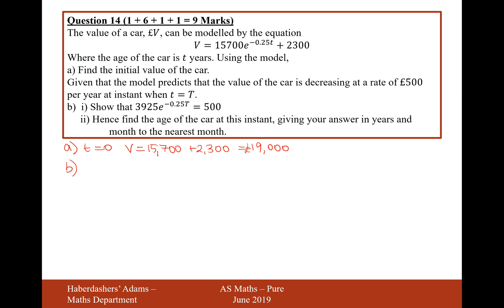Given that the model predicts that the value of the car is decreasing at a rate of 500 pounds per year at the instance when t equals t, show that 3925 e to the minus 0.25 t equals 500. So given that the model predicts decreasing, in this case we need to differentiate. Now the way you differentiate an e equation is you times the minus 0.25 to the front and then you just leave it as e to the minus 0.25.